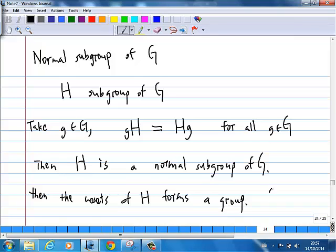And this group is denoted G/H. Earlier, for example, I showed you the cosets form a group, right? But this is not true most of the time.